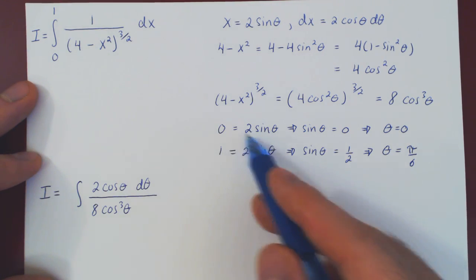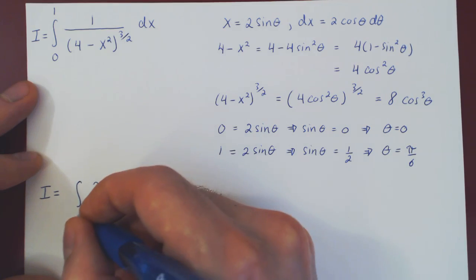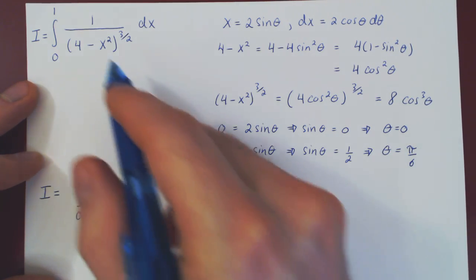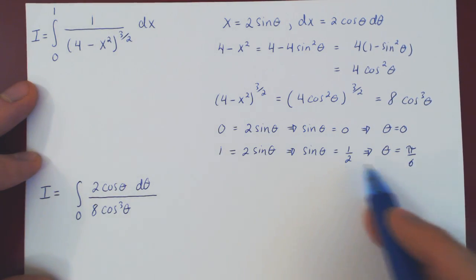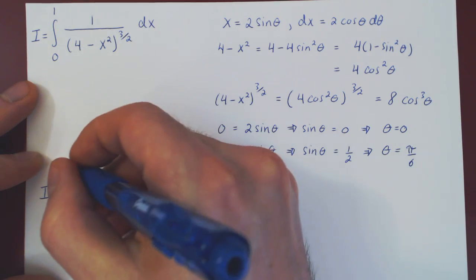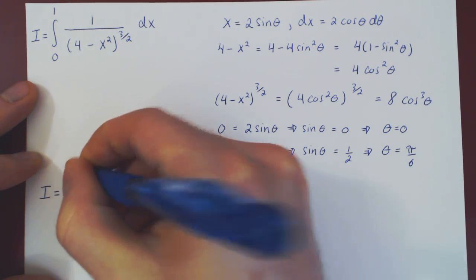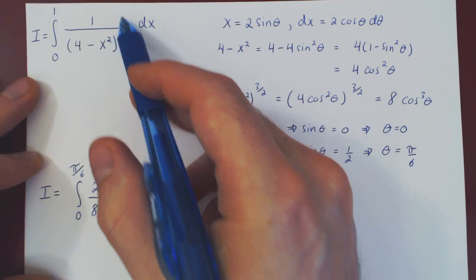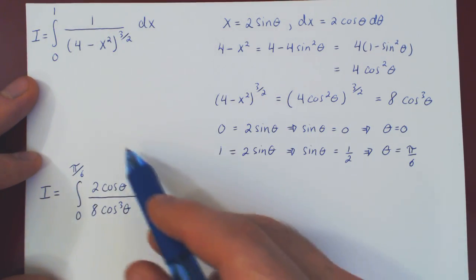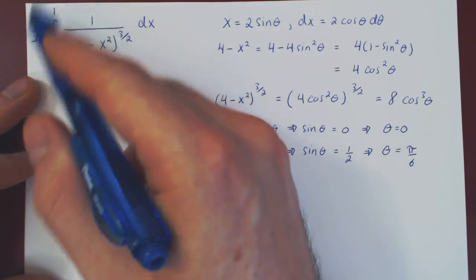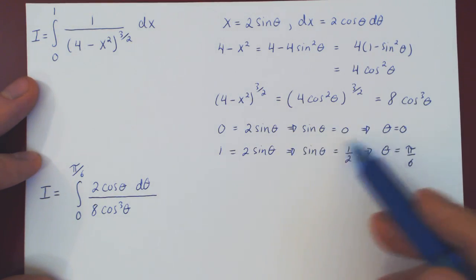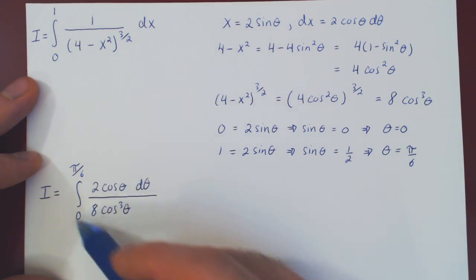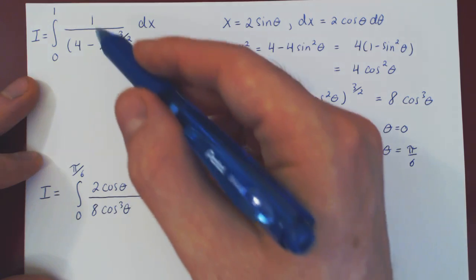When x was 0, theta is also 0, but when x was 1, theta is pi over 6. And now everything that was in terms of x has been replaced in terms of theta, and so we can forget now everything we've done, and now evaluate this definite integral as both are equal.